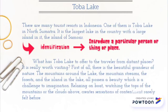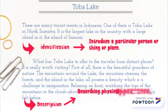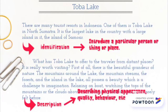Dan paragraf kedua: what Toba Lake has to offer to travelers from distant places is really worth visiting. First of all, there is the beautiful splendor of nature. Nah, itu adalah bagian dari description. Pada bagian yang kedua itu adalah description, yang mana dia menggambarkan secara detail tentang physical, experience, quality, behavior — seperti the mountain around the lake, the mountain stream, the forest. Kayak gitu adalah description namanya.